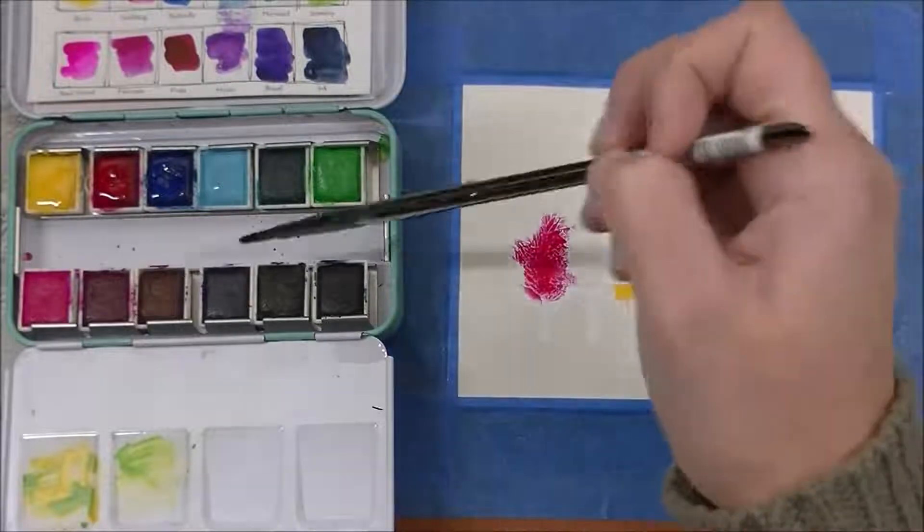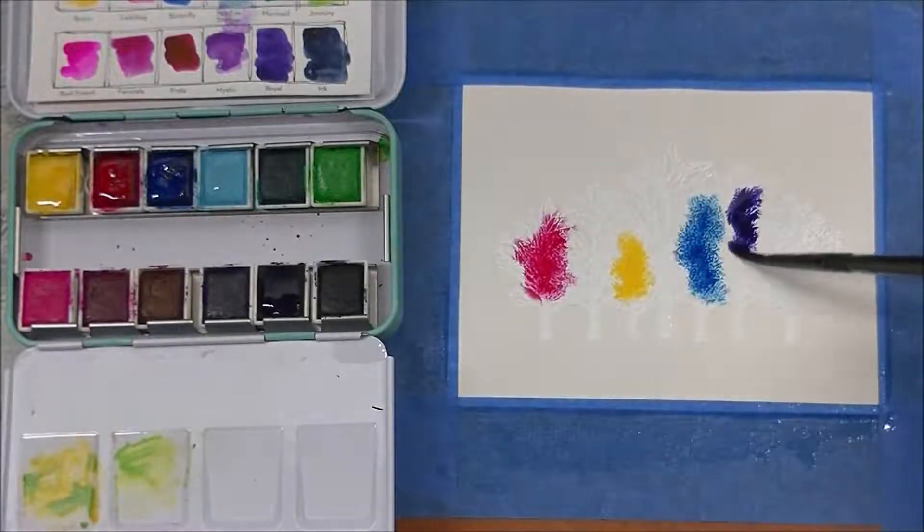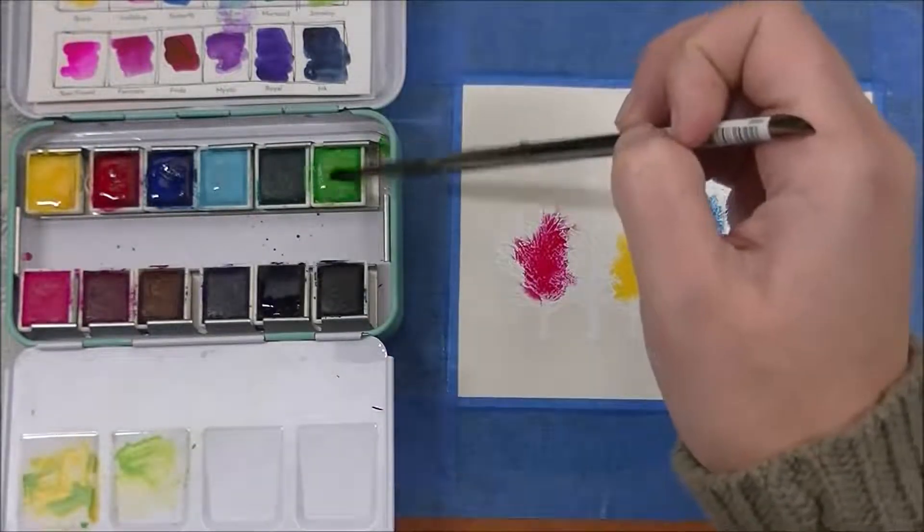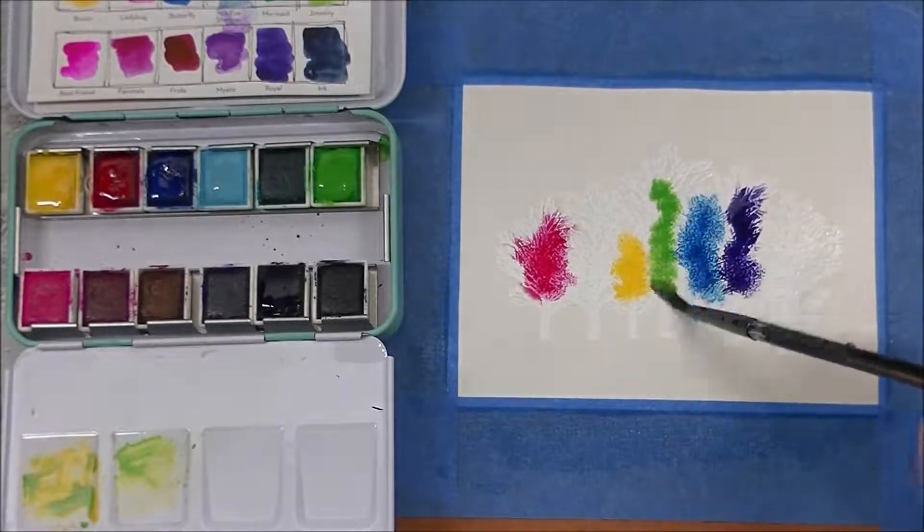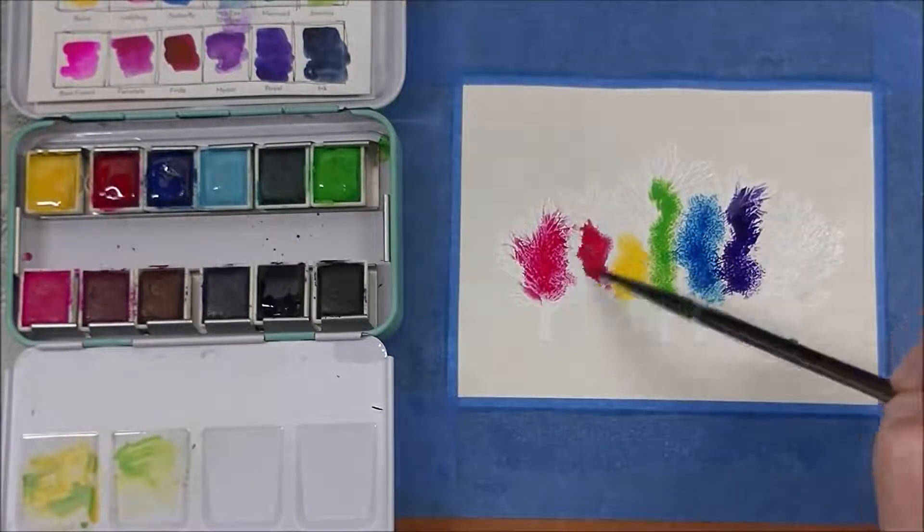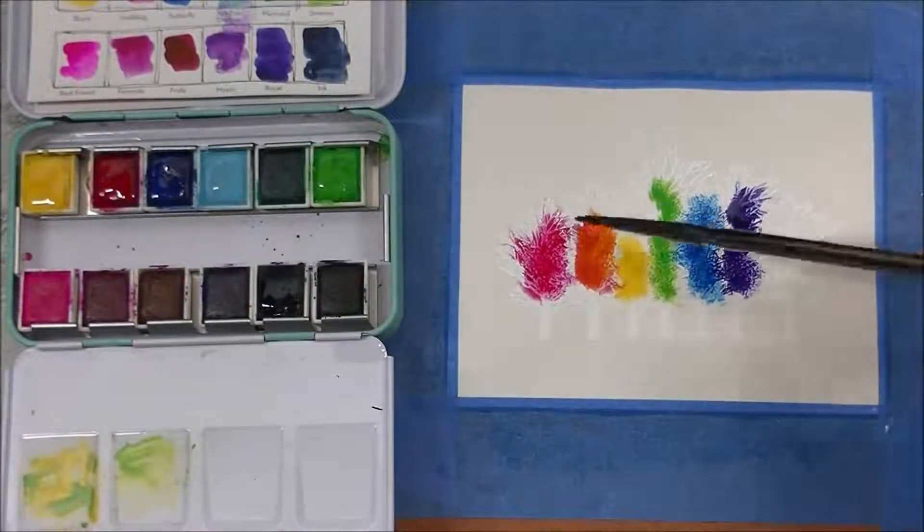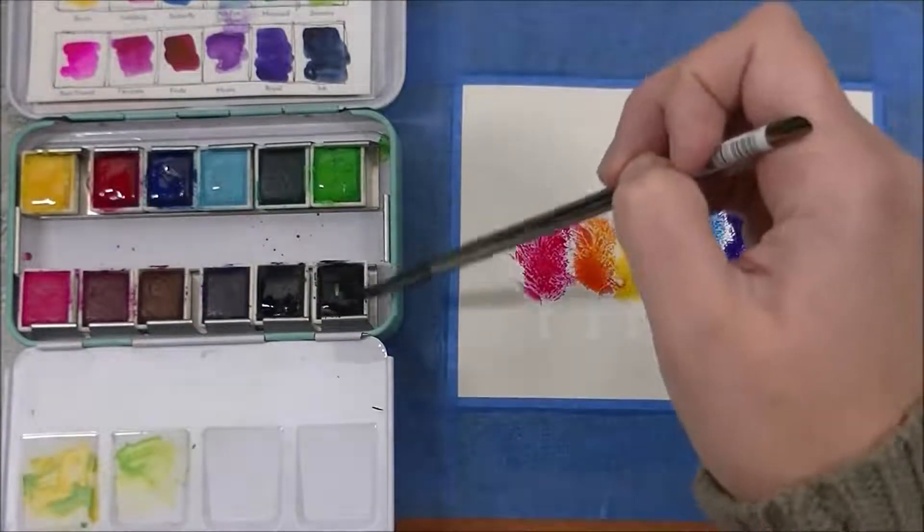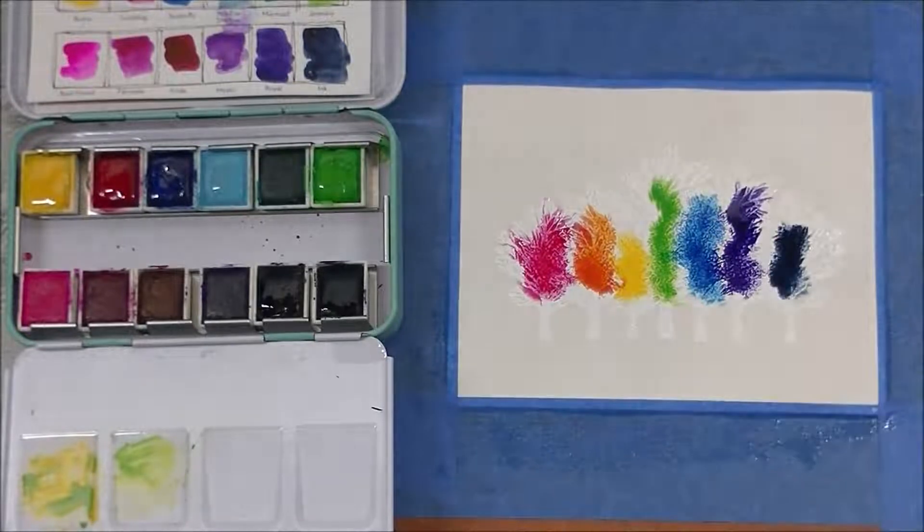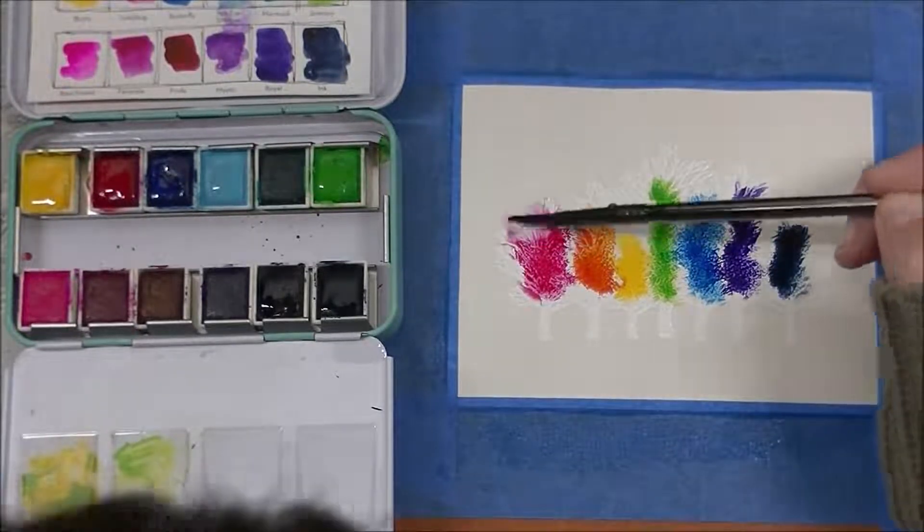You can see how I'm kind of skipping the in-between colors just to start. And I'm just going and putting the color on the center of the tree and then we'll start to blend it out after that just to get the color there. Here, I didn't have an orange in this palette, so I just mixed one out of the red that I used as well as the yellow. Add some indigo there at the end and then we'll take our brush with clean, clear water and start blending that out.